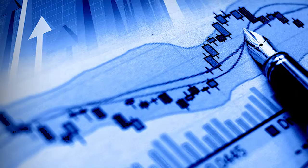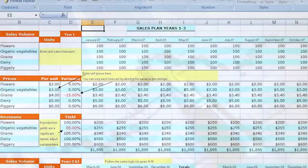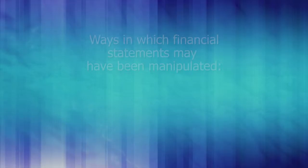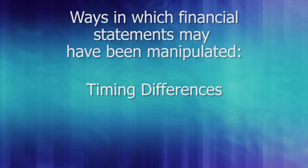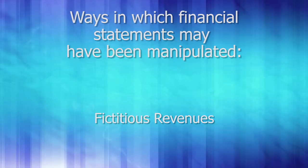A monthly review of the company checking account and financial statements can reveal suspicious activities or vendors. There are several ways financial statements can be manipulated, including timing differences — when revenues are not being recorded in the period in which they were earned, and expenses are not being recorded in the period to which they relate, or when the expense was incurred.